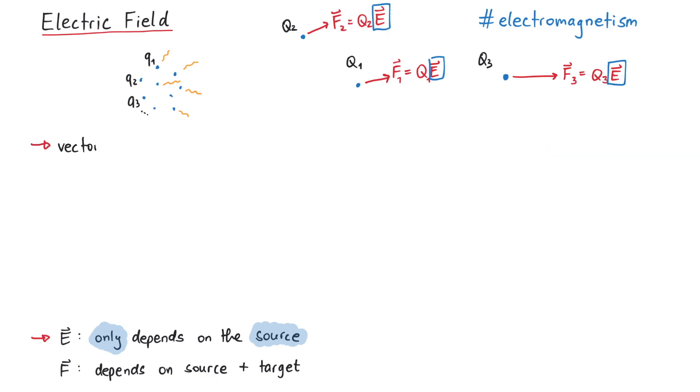Before we tell you how to calculate the electric field, note that the electric field is a vector field. This means that at any point x, y, z in space, the electric field has three independent components, ex, ey, ez. Thus, for every point in space, the electric field gives us a certain vector.